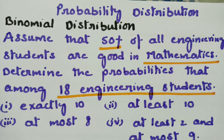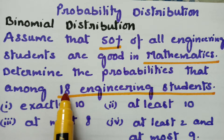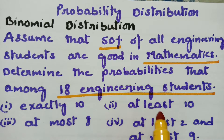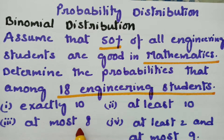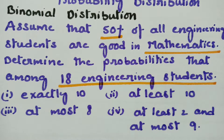We have to find out that exactly 10 among 18 engineering students are good in mathematics, and also at least 10, at most 8, and at least 2 and at most 9 are good in mathematics.